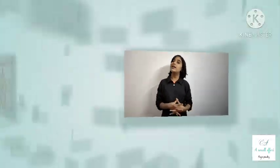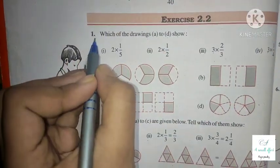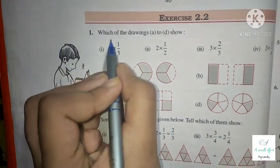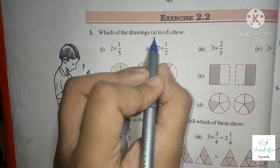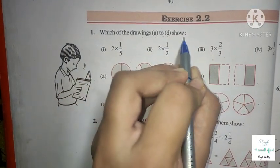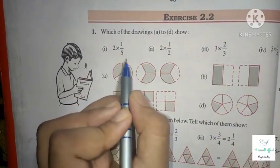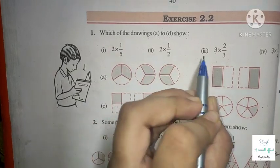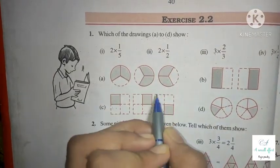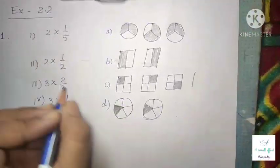Hello everyone, this is Pooja from A Small Effort. Today we are going to start Class 7 NCERT Chapter 2, Exercise 2.2, Question numbers 1 and 2. In Question 2.2 number 1, we have to match the given fractions with the given figures.